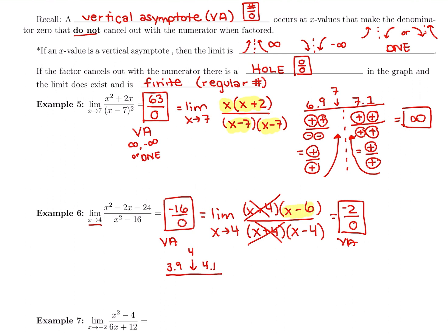Plugging 3.9 into the factored form: x minus 6 gives negative; x minus 4 gives negative — negative divided by negative is positive, so an up arrow on the left-hand limit. Now for 4.1: x minus 6 is negative; x minus 4 is positive — negative divided by positive is negative, so a down arrow. Left-hand limit is infinity, right-hand limit is negative infinity, so the final answer is that the limit does not exist.